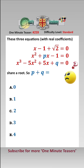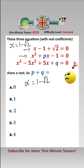We can solve this quite neatly. Let's call our shared root alpha. Looking at the first equation, x is 1 minus root 2, so clearly the shared root must be 1 minus root 2. Looking at the quadratic, by the conjugate roots theorem, the second root must be 1 plus root 2.